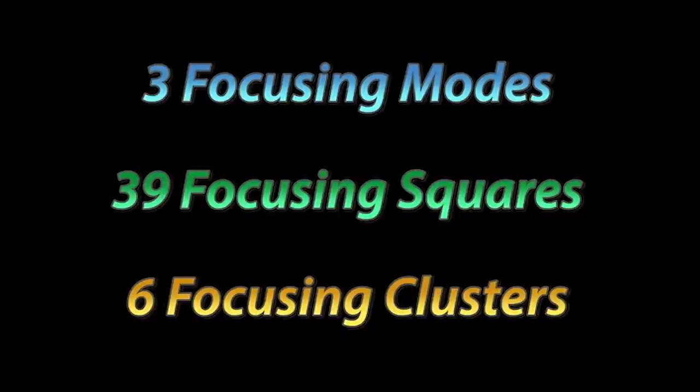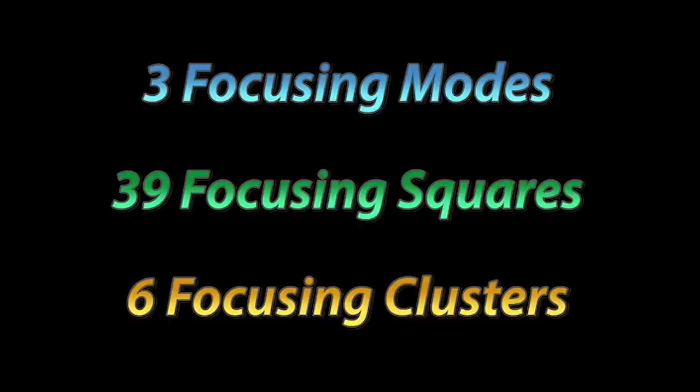Having said that, beginners are often intimidated with the optical focusing system because we'll be talking about three focusing modes, 39 focusing squares, and six focusing clusters. It's easy to get confused on this. What I would recommend is watch it through one time and then go get your camera and follow along a second time. If you need to go through it a third time it's going to be worth it because you're going to be using these skills for the life of your camera.